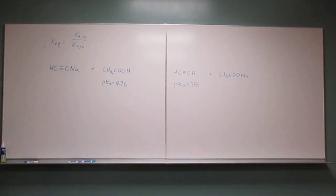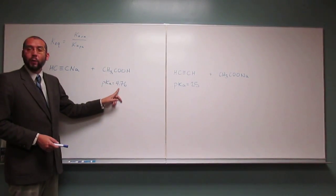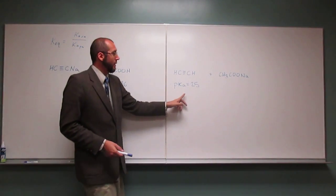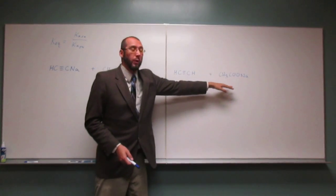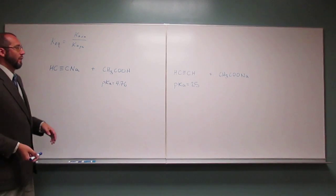So what we need to do now is figure out what is the reactant acid and what is the product acid. Well, this problem kind of helps you out by showing you that the pKa of this is 4.76, the pKa of this is 25. They don't give you a pKa of this or this. So it kind of tells you what's the acid and what's the base.